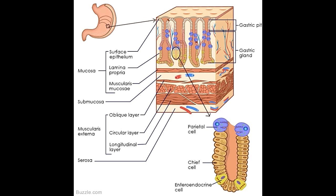The submucosa, which lies under the mucosa, is made up of connective tissue. Under the submucosa lies the muscularis externa, which consists of layers of smooth muscle. The muscularis externa is composed of an outer longitudinal layer, a middle circular layer, and an inner oblique layer. It is the contraction of these muscle layers that helps in mixing, churning, and breaking down food. The outer layer covering the stomach is called the serosa, which is fused with the visceral peritoneum and is composed of simple squamous epithelium and areolar connective tissue.